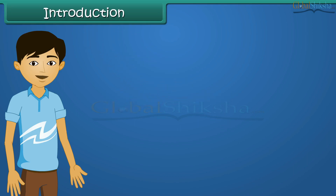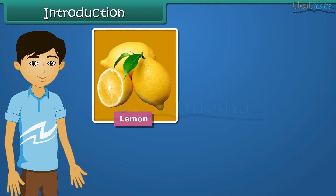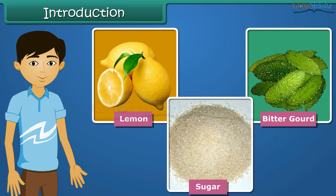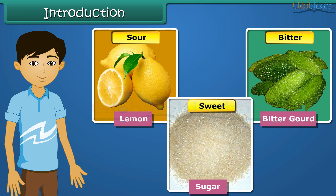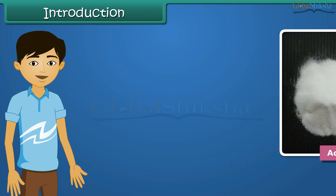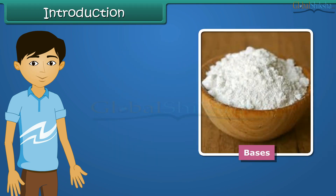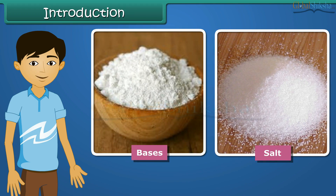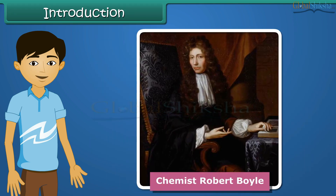Hello students, we have lemon, bitter gourd and sugar. Some of these foods taste sour, some taste bitter, some taste sweet and some are salty. The sour, bitter, sweet and salty taste of foods arises due to the presence of acids, bases and salts in them. In the 17th century, chemist Robert Boyle first labeled substances as acids and bases.